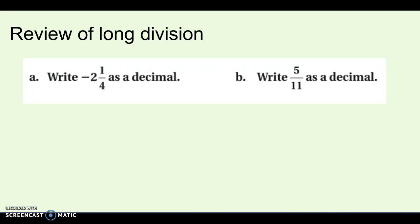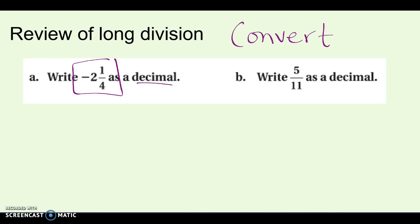Besides knowing what a rational number is, we have to be able to convert between forms of rational numbers — whole numbers, mixed numbers, fractions, and decimals can all be different forms. We need to know how to go back and forth. We're going to do two quick examples using long division. If given a mixed number, I should be able to write it as a decimal. I'll take the whole number part and set it aside so I can work on the fraction part.